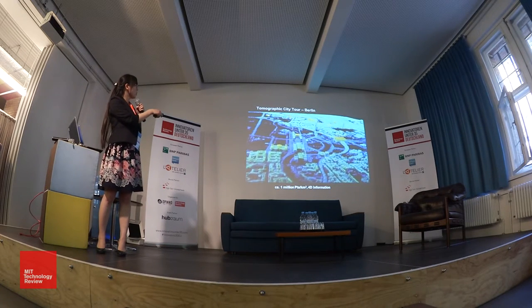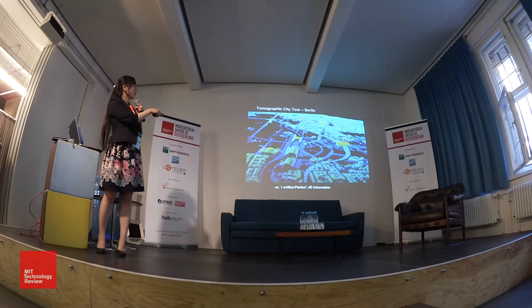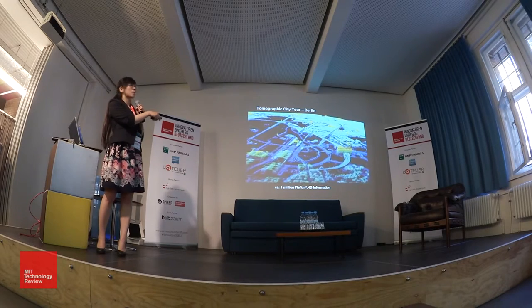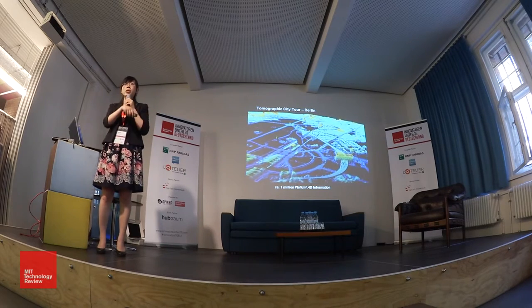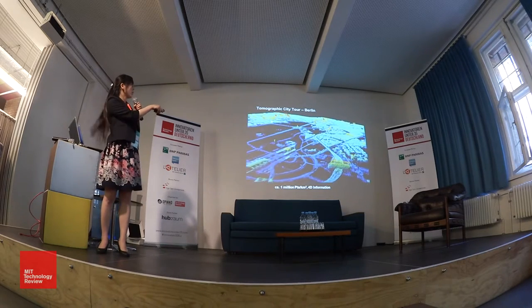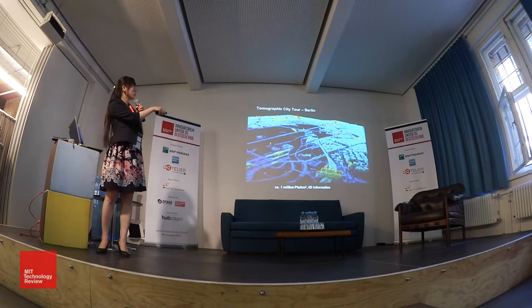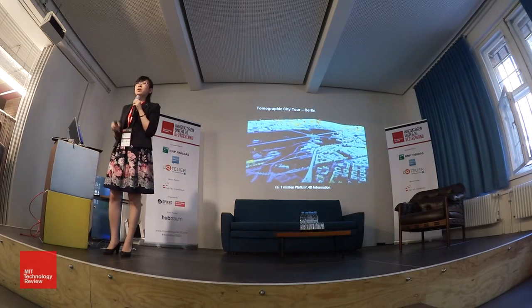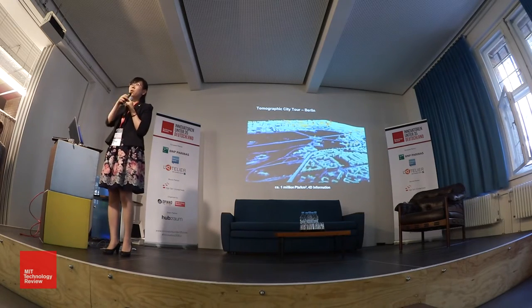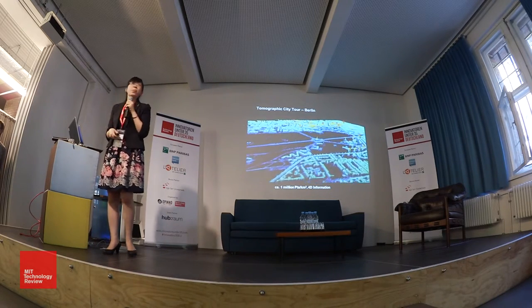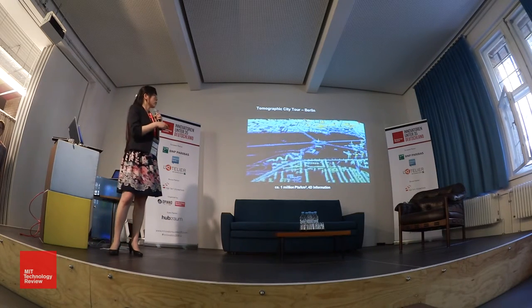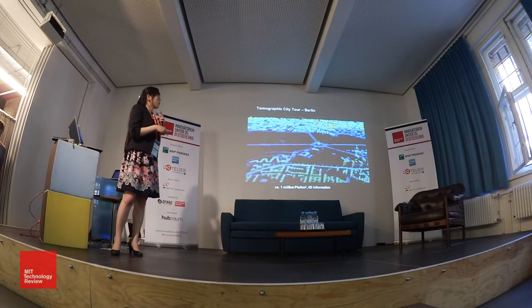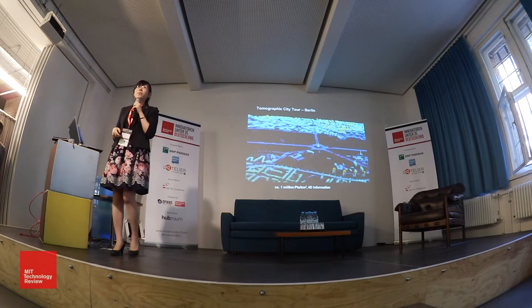What you see here is the Tiergarten — for instance, this is the statue in the center. Pay attention to these regular rasters — these are actually the lamp poles along the roads. So this is the 3D information we are extracting.